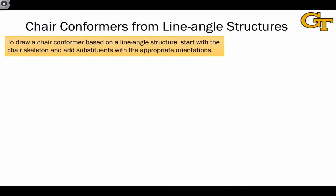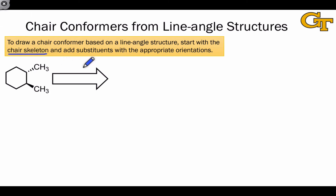To rigorously analyze the conformations of a given cyclohexane, we need to convert a top-down or line-angle structure into a chair conformation. The most systematic approach for doing this starts with the chair skeleton — a bare cyclohexane — and then involves adding substituents with the appropriate orientations based on the directional cues given by wedges and dashes in the structure.